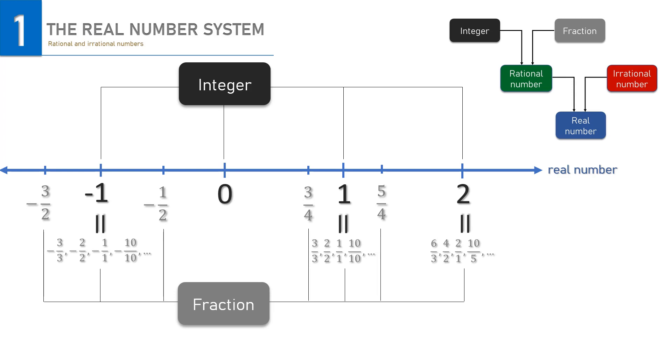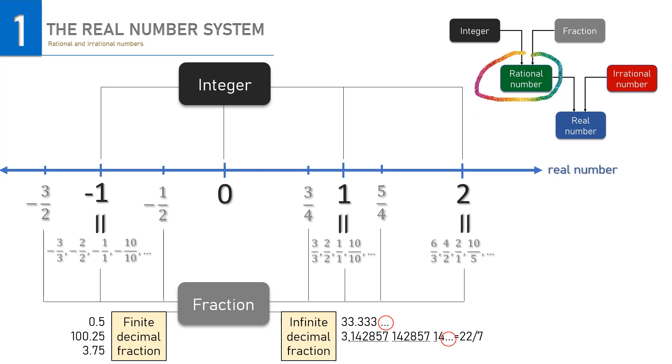Fractions can be expressed as decimal fractions, whether it is finite decimal fractions such as 0.5, 100.25, 3.75 or infinite decimal fractions such as this. The three dots indicate that the digit 3 in the first example or the recurring number 1428571 repeated indefinitely. Decimal fraction with recurring number like this indicates that the fraction is a rational number, or can be made as a ratio of two integers. 33.33 dot dot dot is a ratio of 100 per 3, whereas 3.1428 dot dot dot is a ratio of 22 per 7.